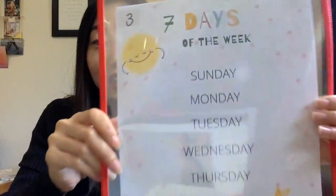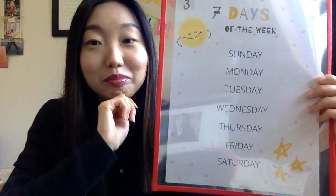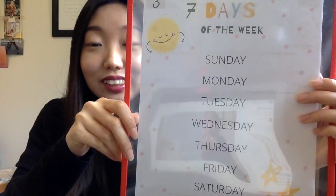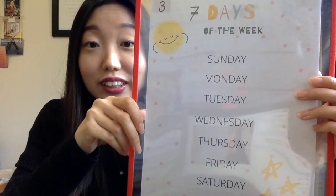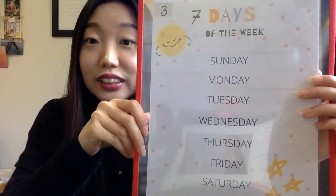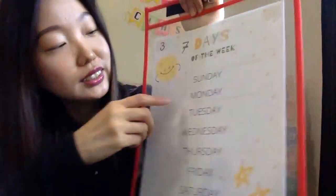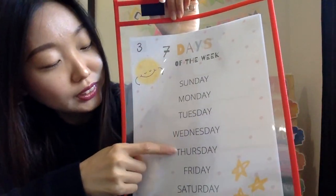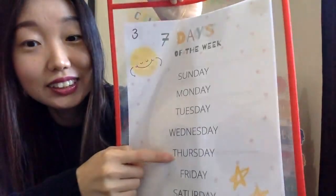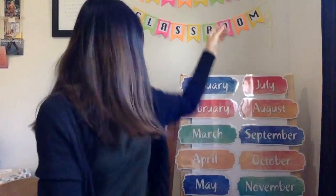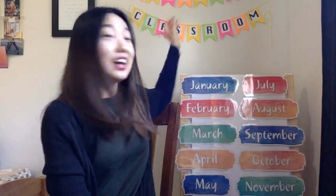All right, get your third handout ready. We are gonna find Thursday. Can you find Thursday here? What is the first letter of Thursday? T — and for Thursday it's T-H after T. So let's see — T-H, T-H, T-H — yes, that's Thursday! Good job.